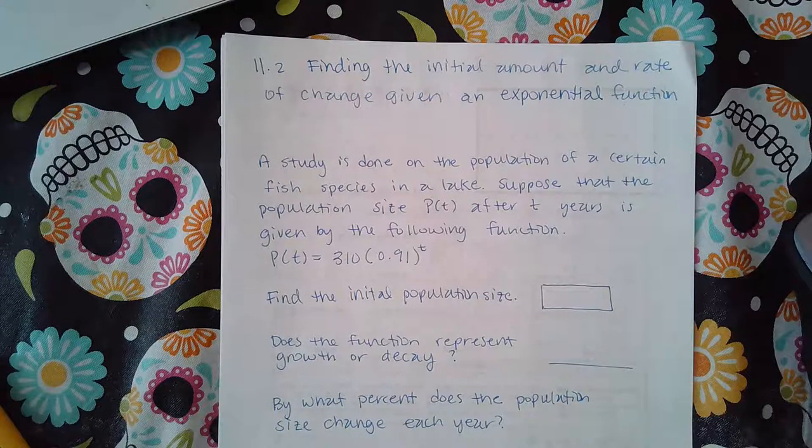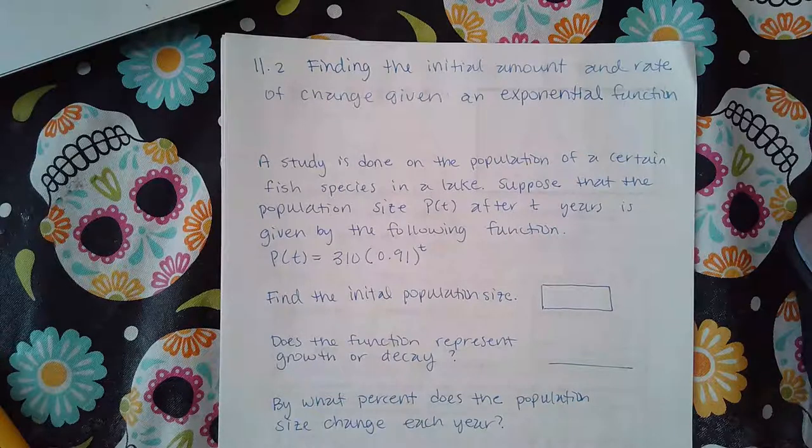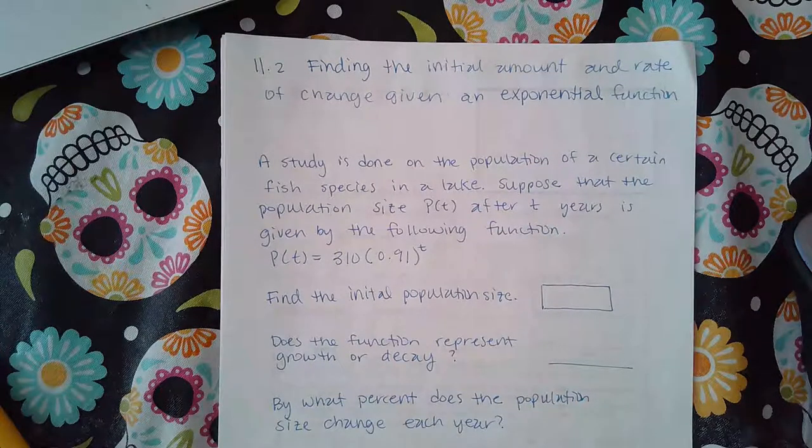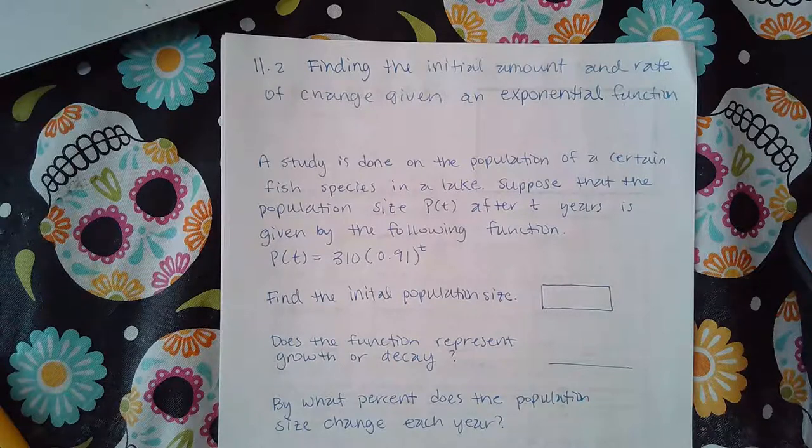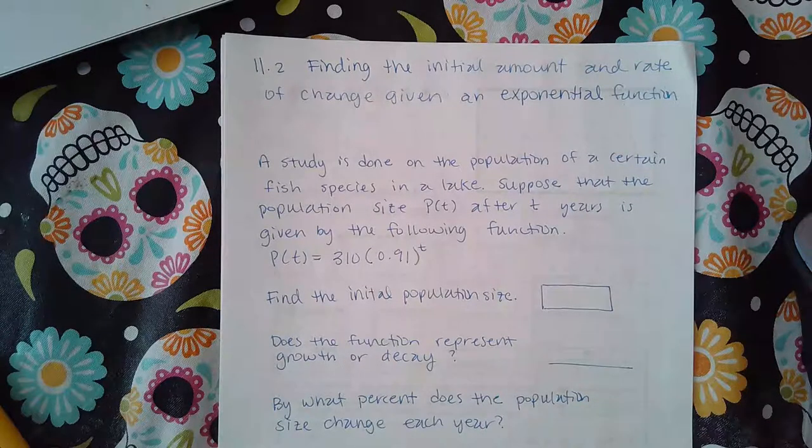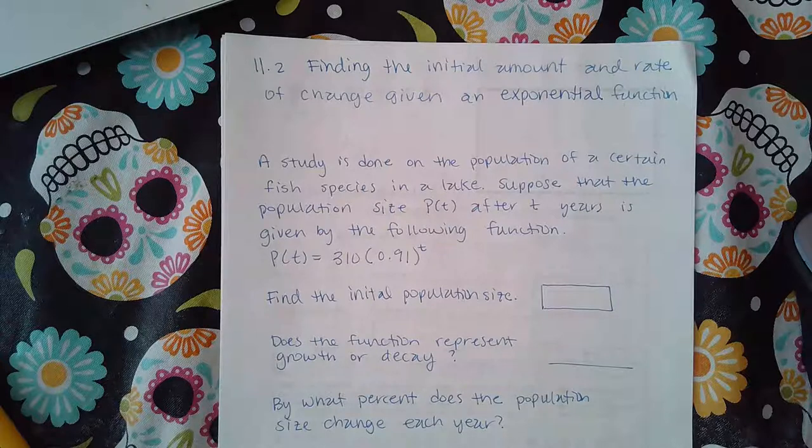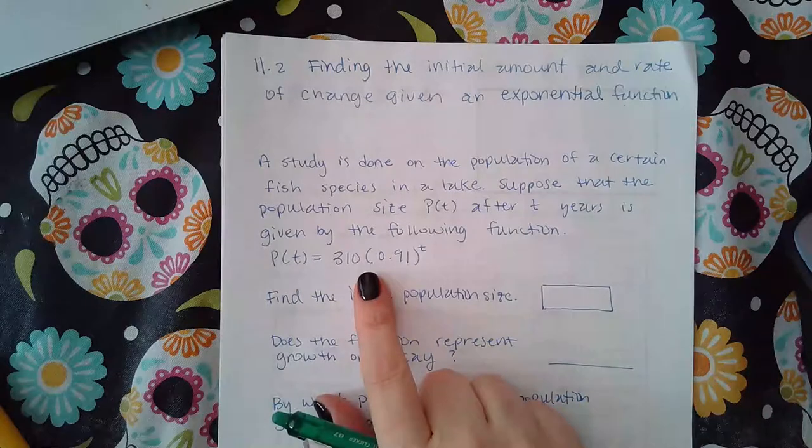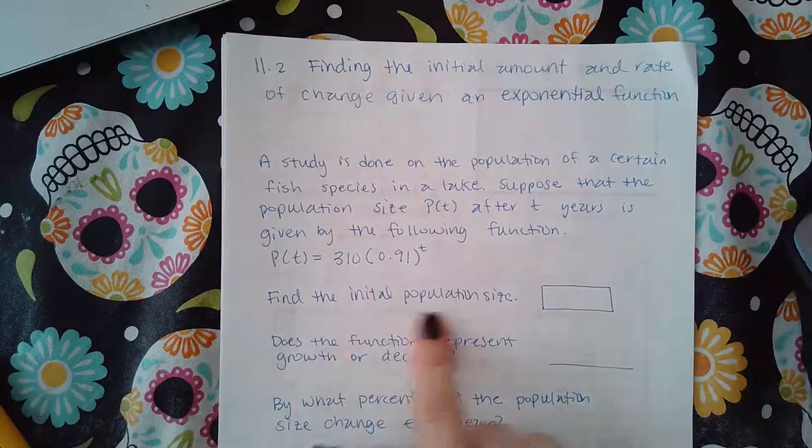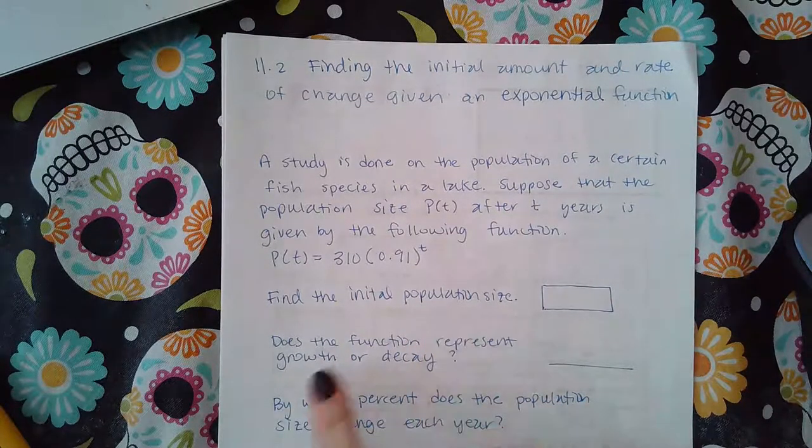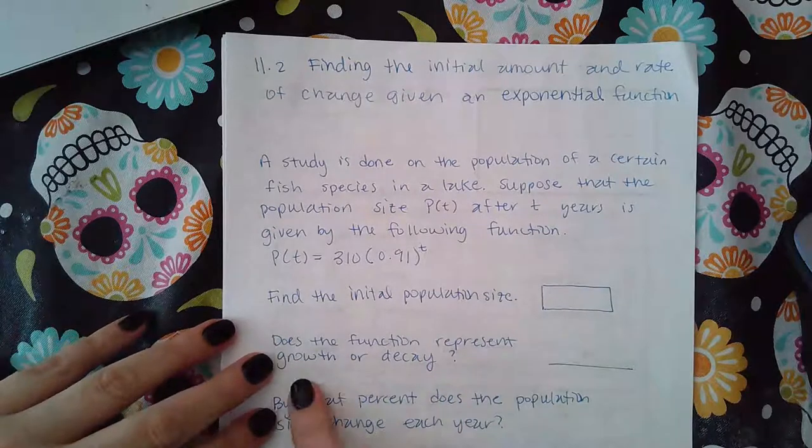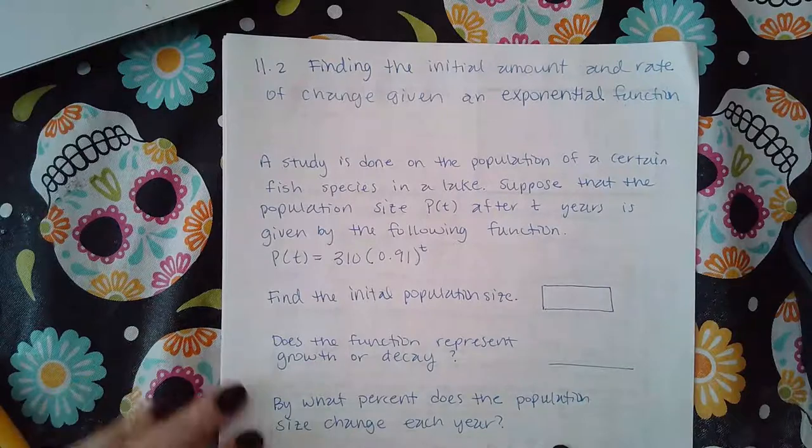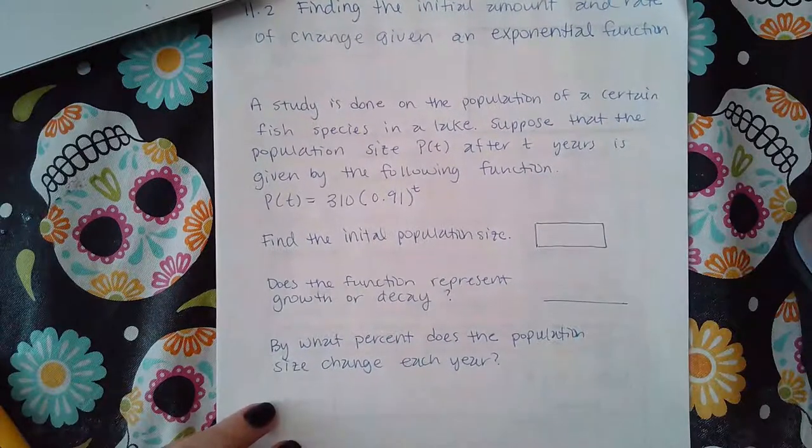Here we are finding the initial amount and rate of change given an exponential function. A study is done on the population of a certain fish species in a lake. Suppose that the population size p(t) after t years is given by the following function P(t) = 310(0.91)^t. Find the initial population size. Does the function represent growth or decay, and by what percent does the population change each year?